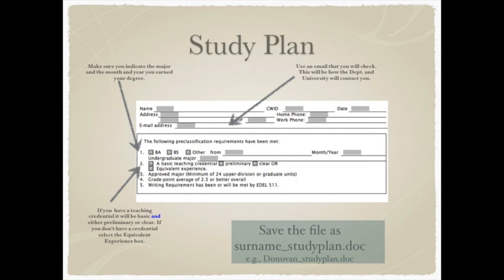Now I'm going to take a few minutes to talk about the study plan. The form is created in Microsoft Word — please use Word to fill this out to ensure the document is formatted according to university requirements. The bottom part of the study plan is already filled out and basically lists the courses we talked about and what semesters you will be taking them in. The part you need to fill out is the top part. Pause and locate this form so you can fill it out as we go through. For your name, use the name that the university has as your official name, along with your campus-wide ID, today's date, and the address that everything is mailed to, your home phone, and work phone. If you don't have a home phone, just put in a cell phone.